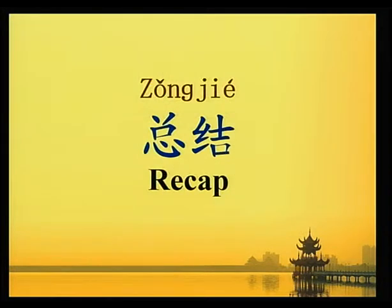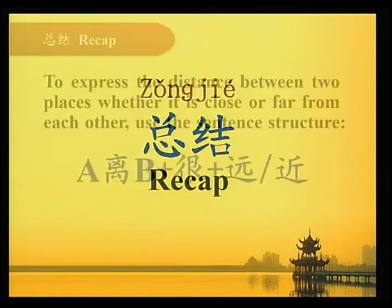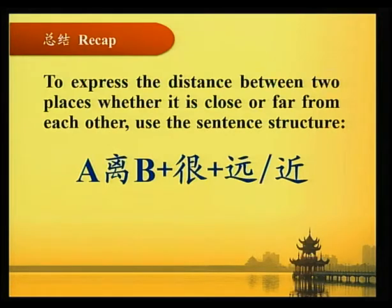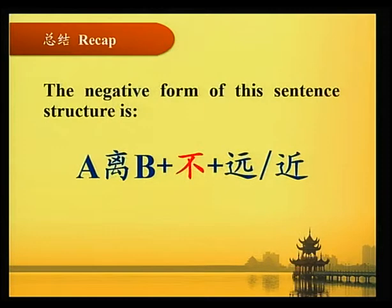总结 Recap. To express the distance between two places, whether it is close or far from each other, use the sentence structure A 离 B 很远/近 (A, Li, B plus Hen plus Yuan/Jin). The negative form of this sentence structure is A 离 B 不远/近 (A, Li, B plus Bu plus Yuan/Jin).